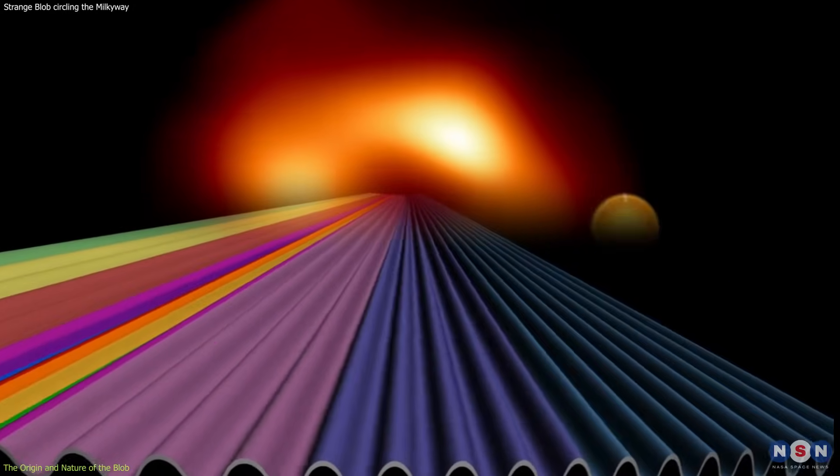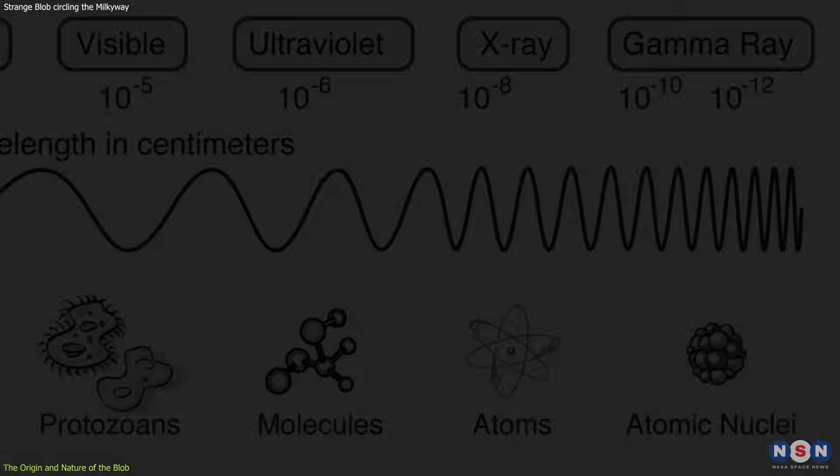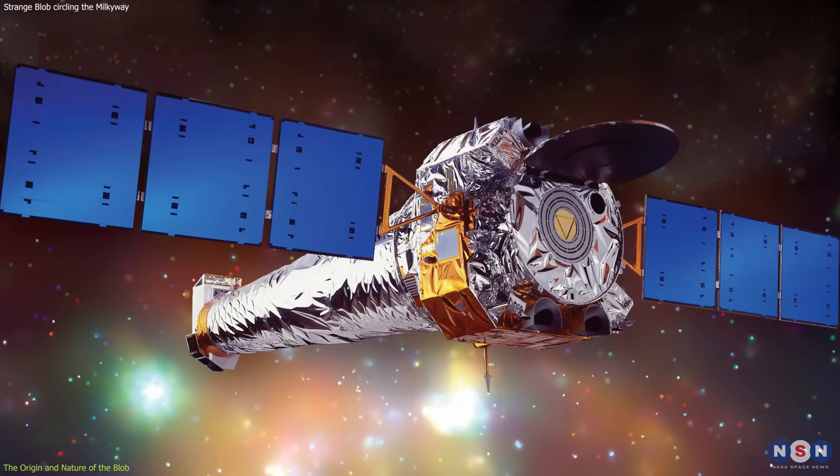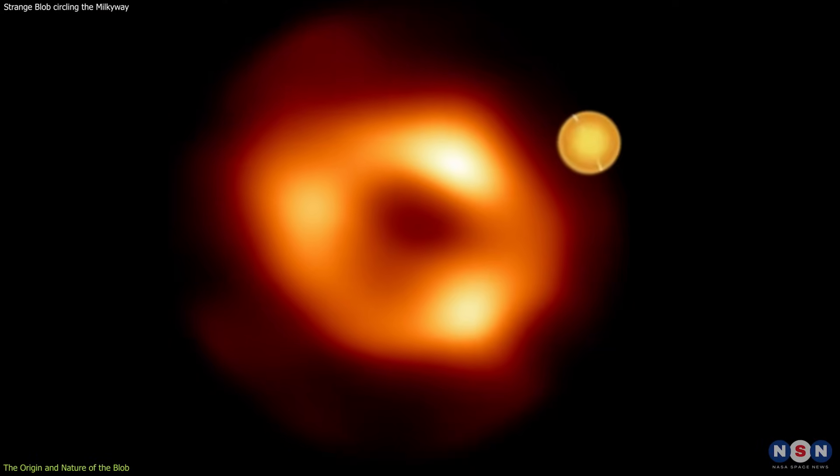As the blob orbits the black hole, it emits radiation in different wavelengths, depending on its temperature and the strength of the magnetic field. Initially, the blob emits mostly X-rays, which are also detected by other telescopes, such as the Chandra X-ray Observatory.